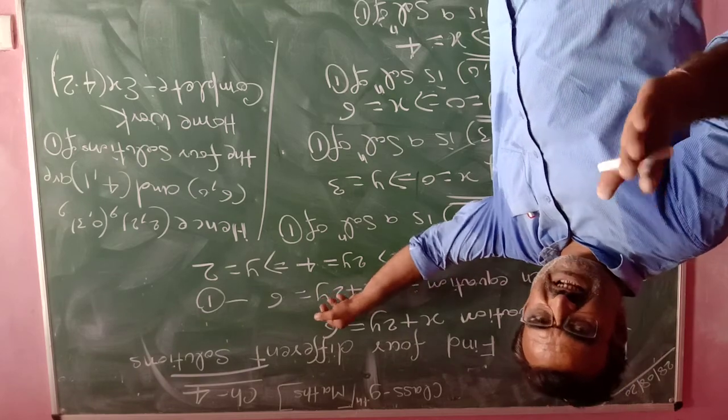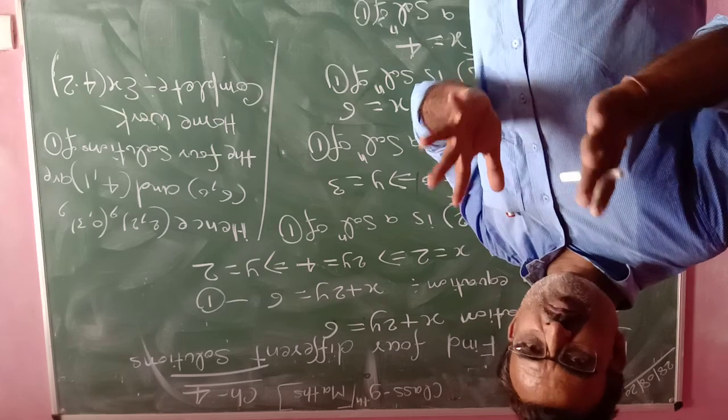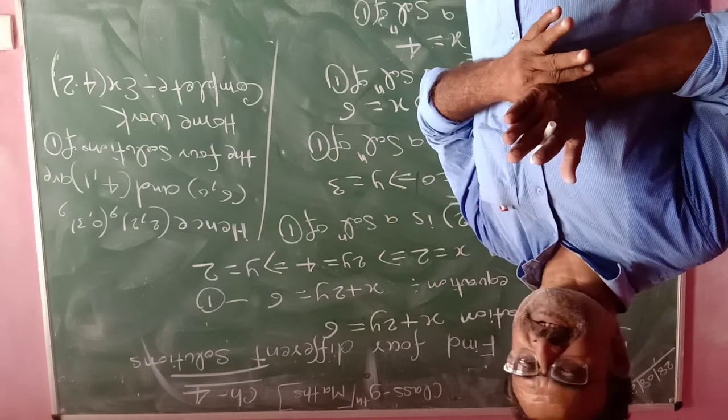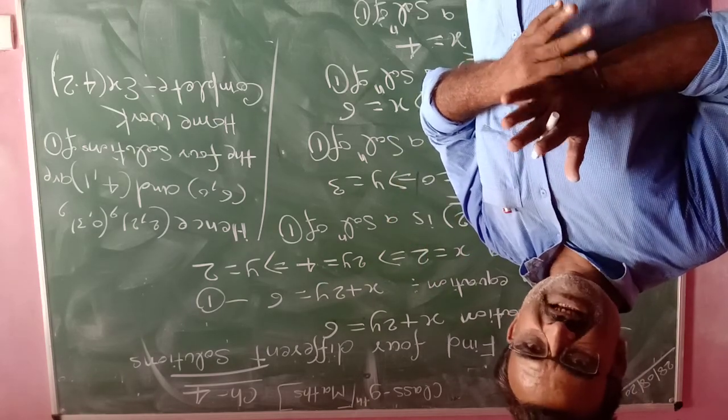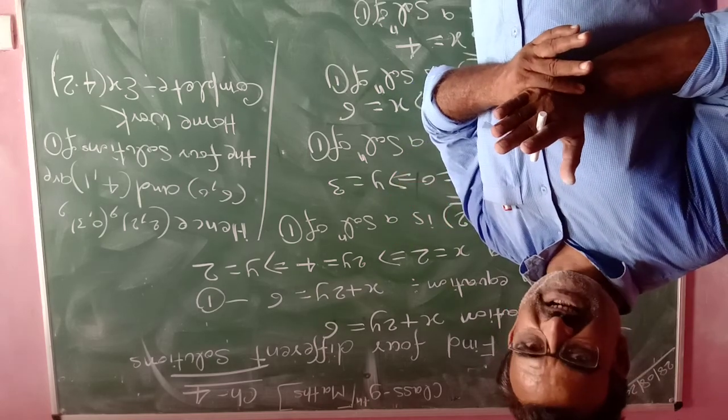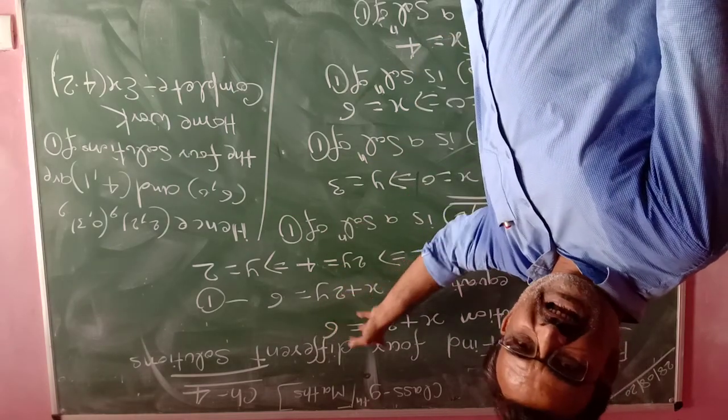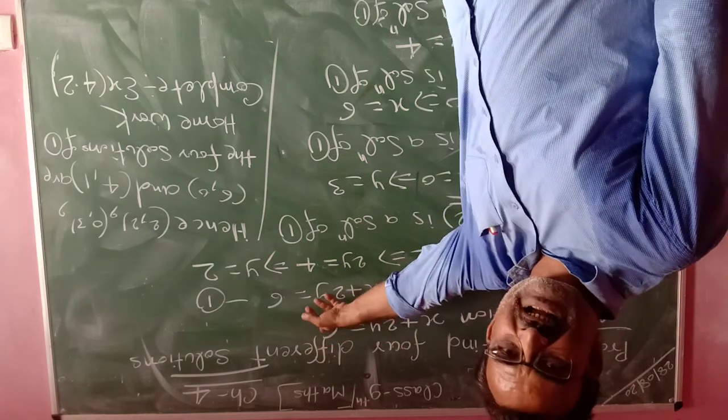This is the linear equation x plus 2y equal to 6. This means we can find four values for x and y for which the left hand side equals the right hand side.